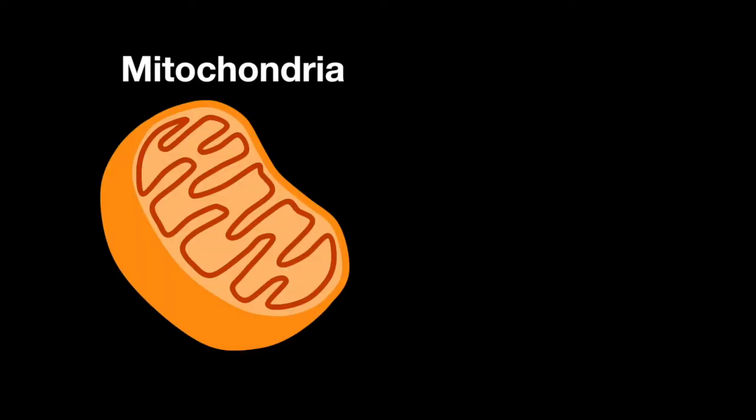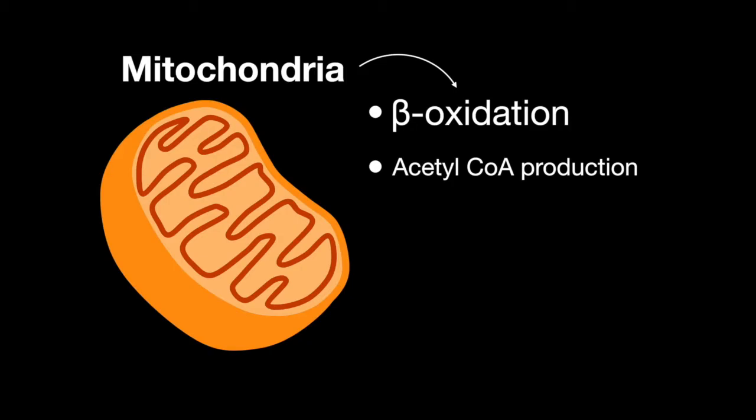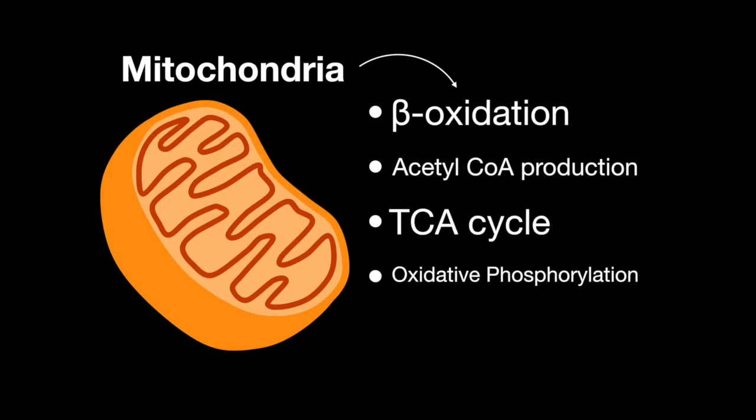The first site of metabolism is in the mitochondria. The processes that happen here are beta-oxidation of fatty acids, acetyl-CoA production, the TCA cycle, oxidative phosphorylation, and ketogenesis.